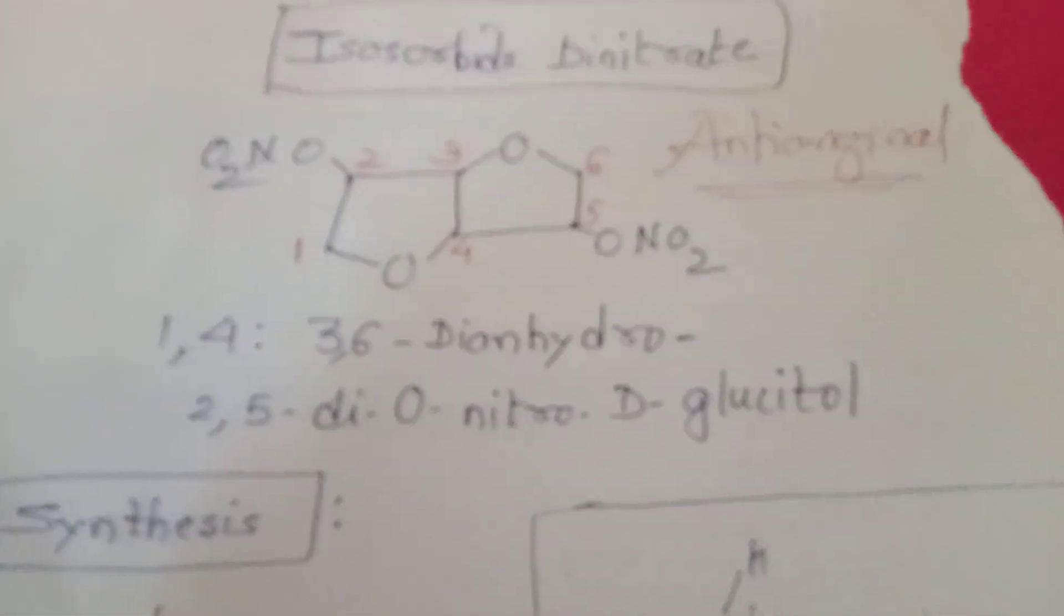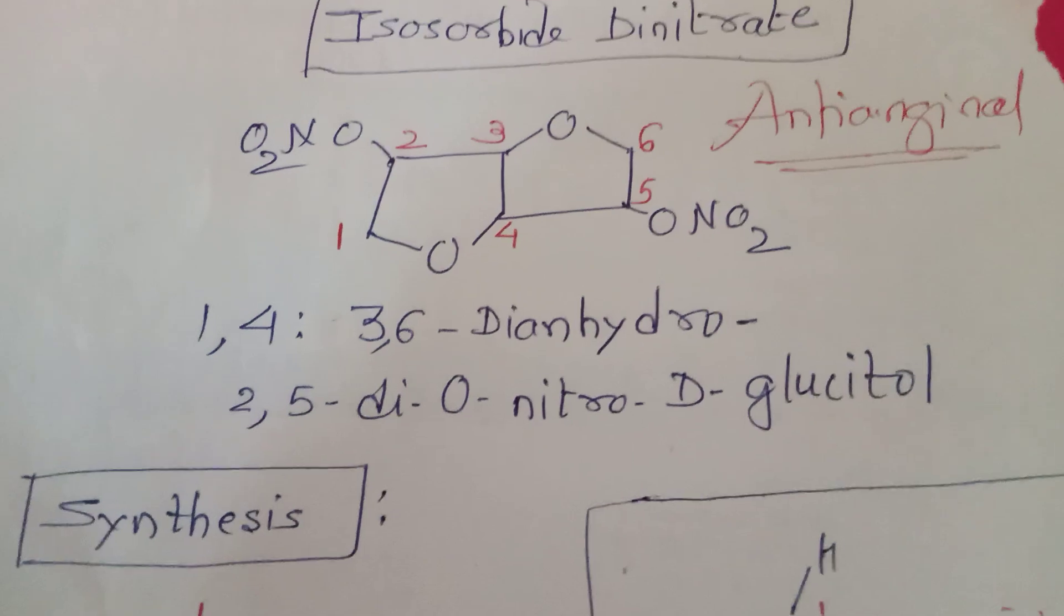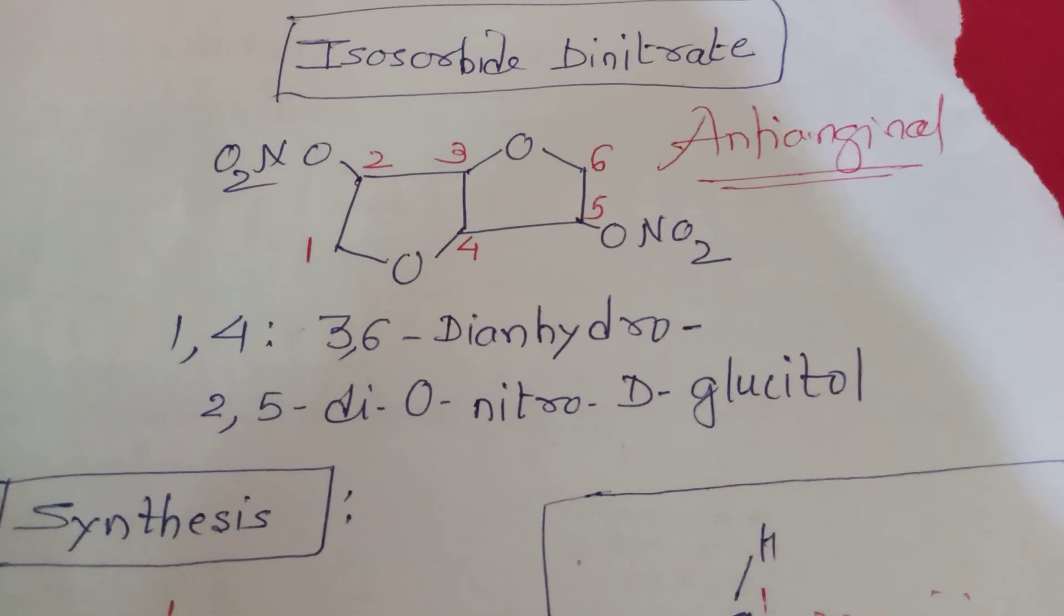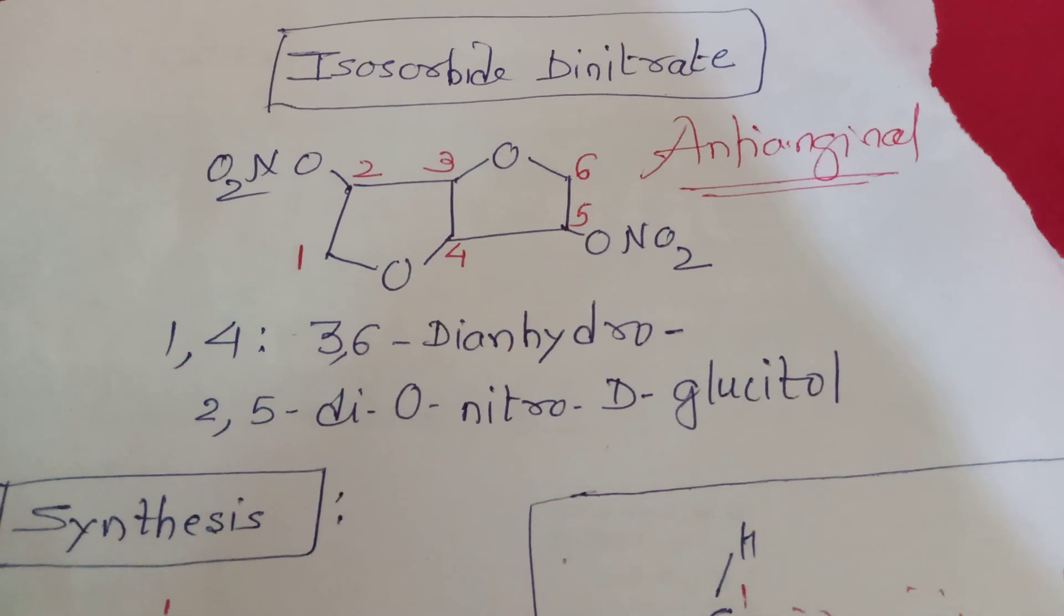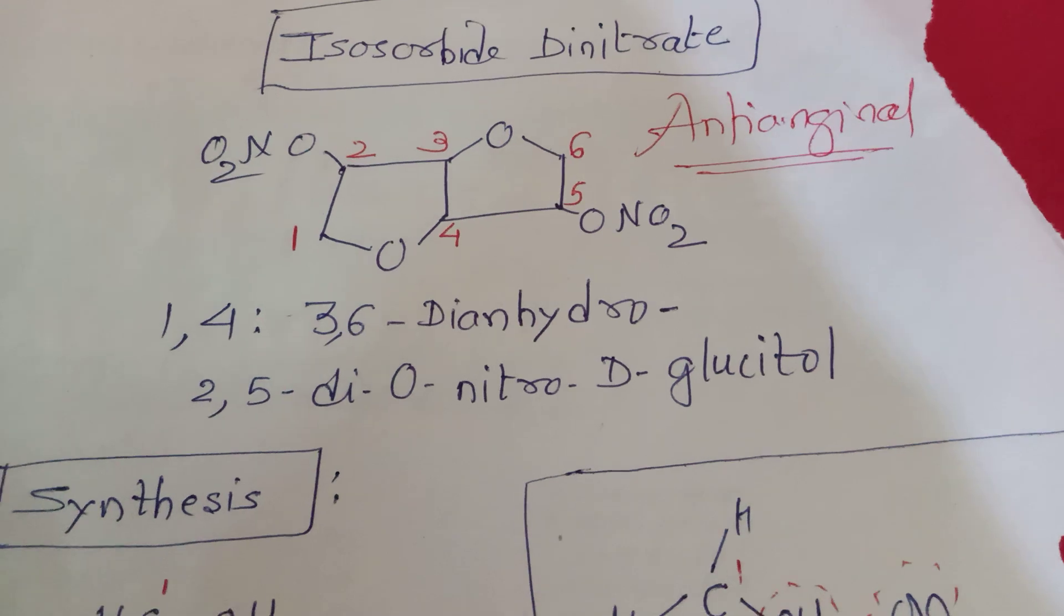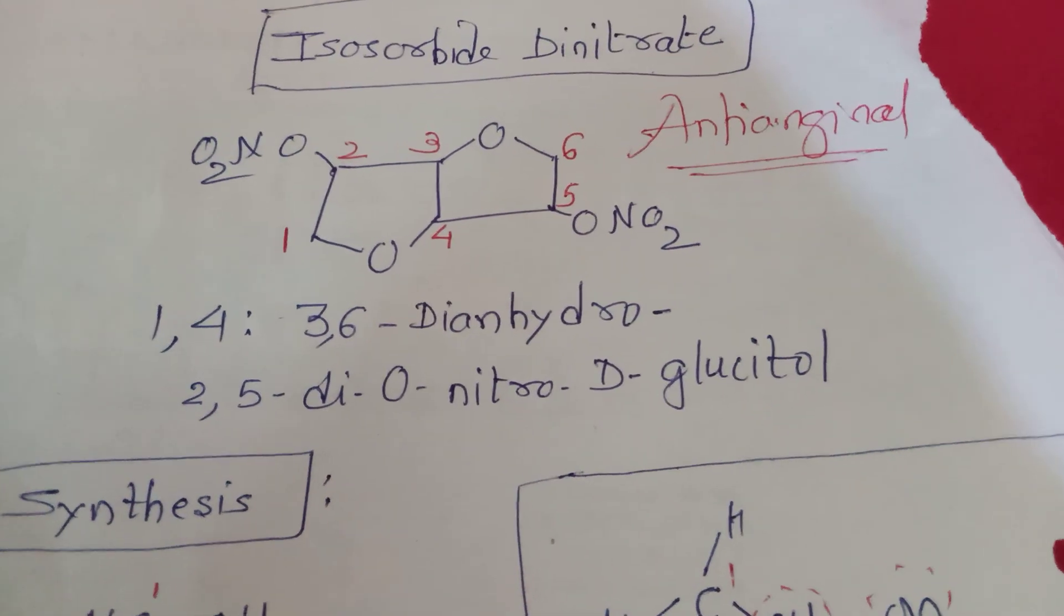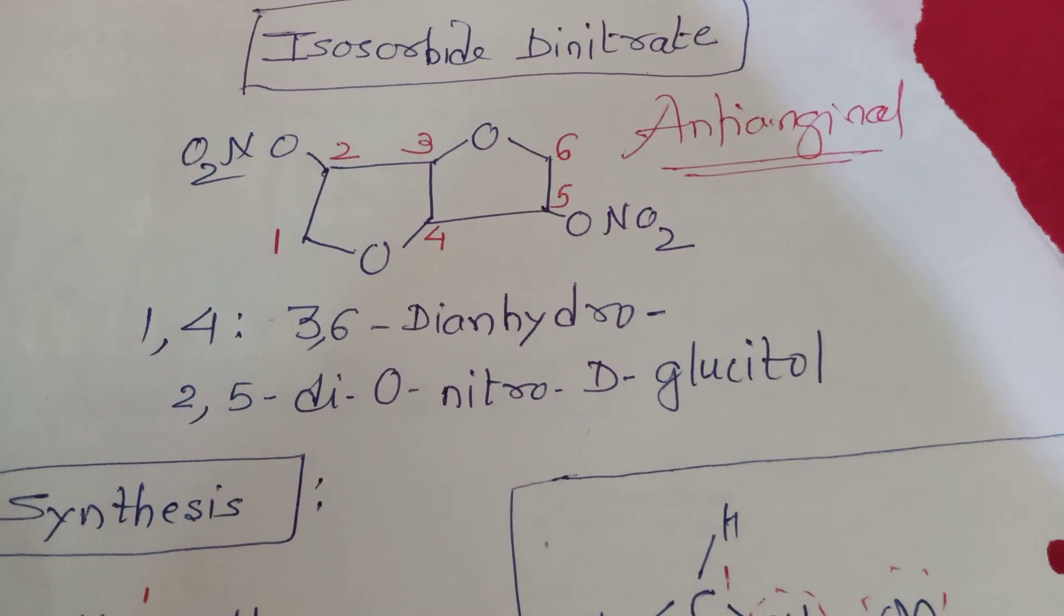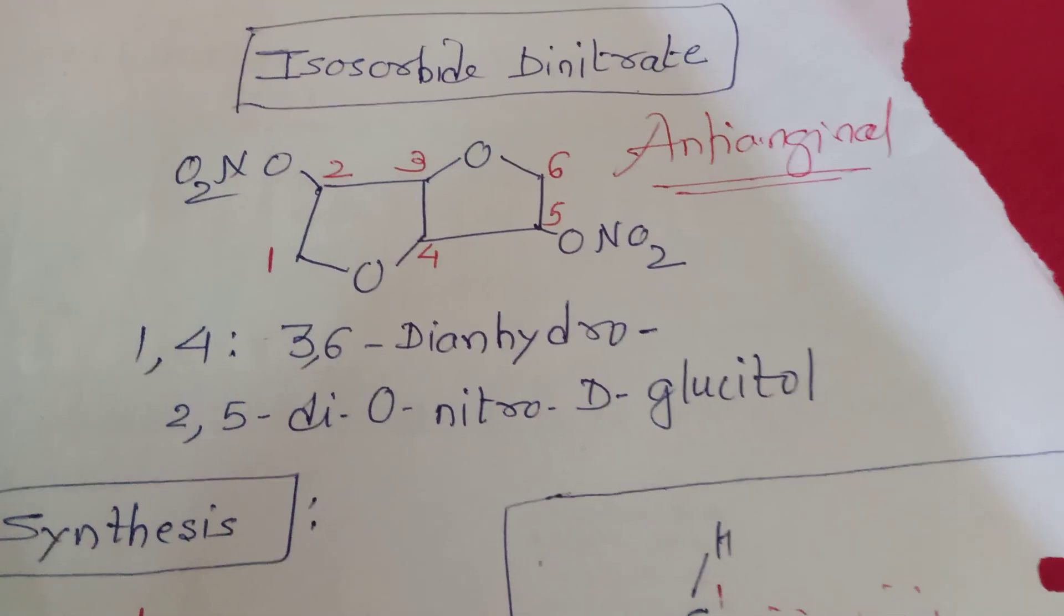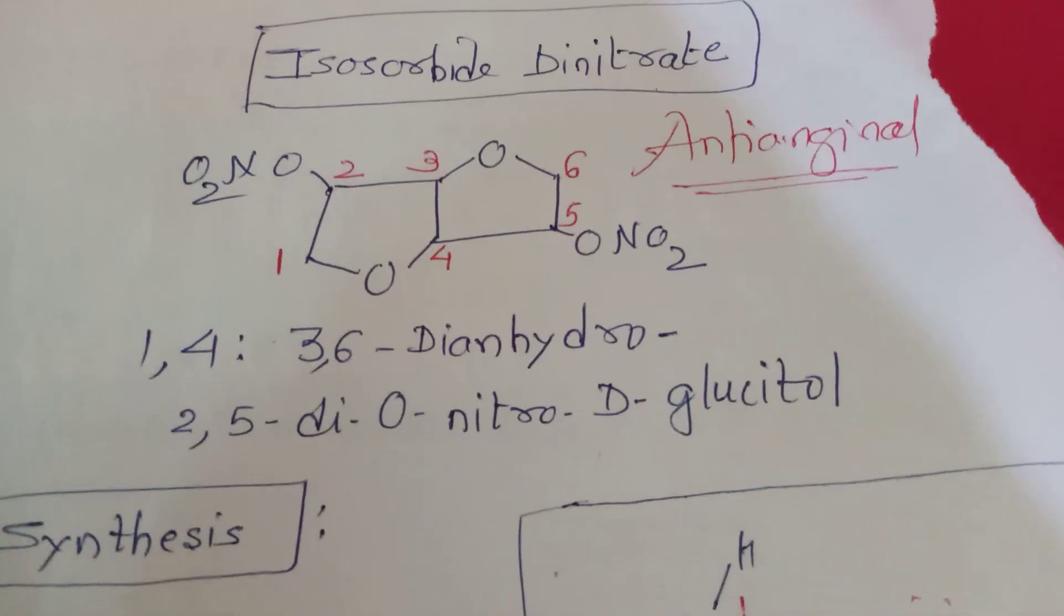If you look at the structure, you will find that there are two five-membered rings containing oxygen joined with each other. Two oxygens are there at position number 2 and 5 along with two nitro groups on oxygen.